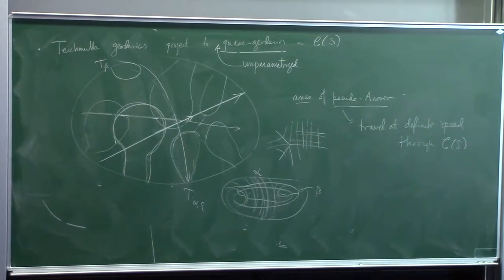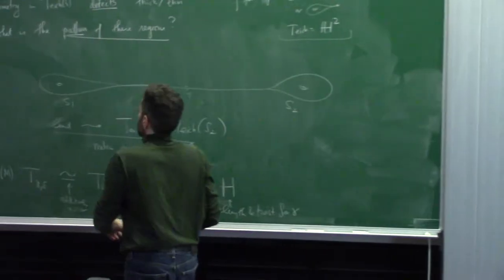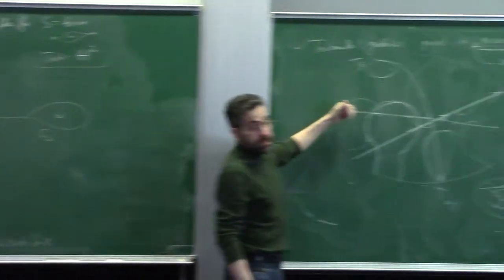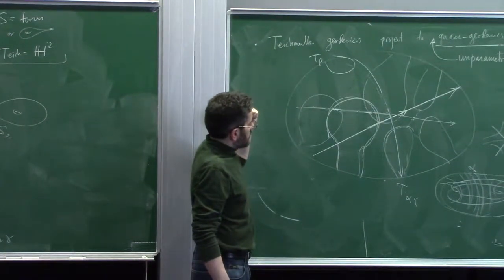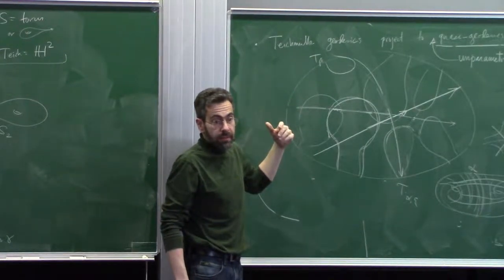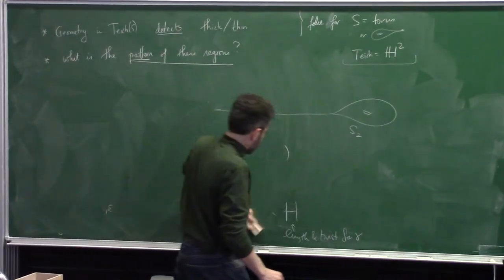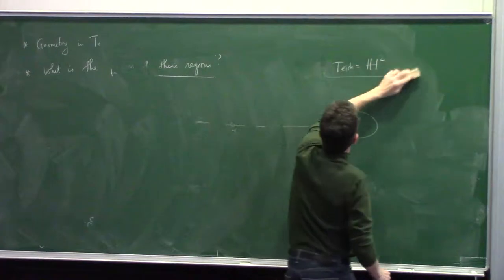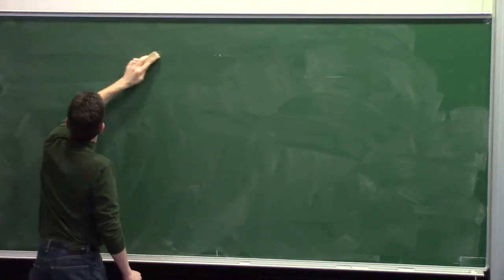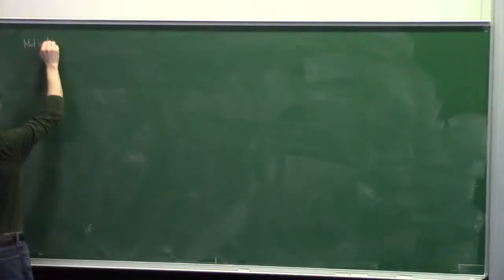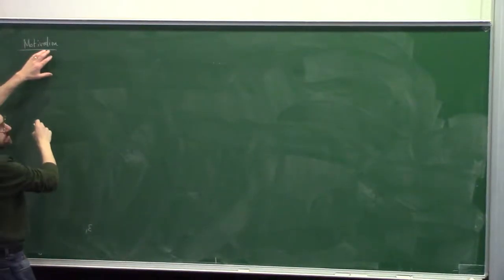There are a few more things I want to say about behavior technology, and then I want to talk about the analogous problem for the Bay-Peterson method, which is a little bit of a problem to define. Why should one care about this kind of picture anyway? There are different motivations, but one of my motivations for thinking about this is its connection to the study of hyperbolic three-manifolds.